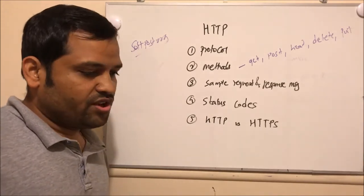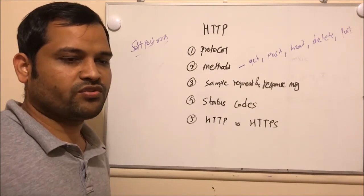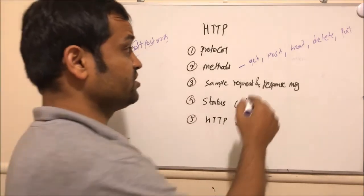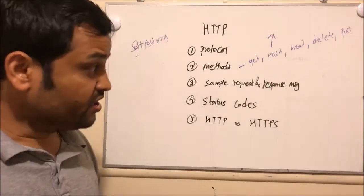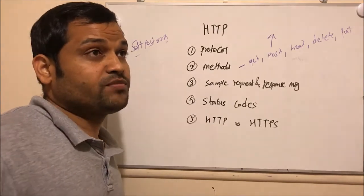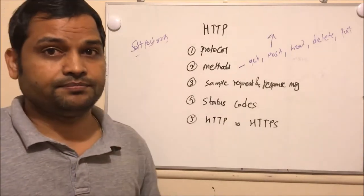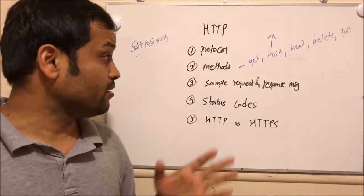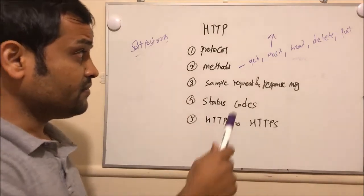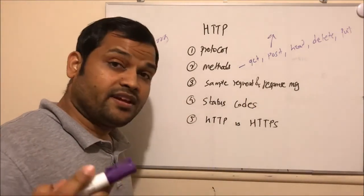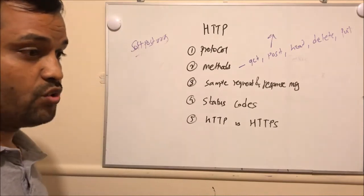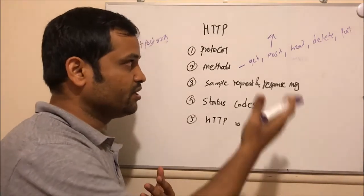The POST request is generally used when we submit forms. Like online, there are lots of various forms, and whenever we submit them, this POST request is sent. Then we have the HEAD request, which can be used to access the headers of the request. Then if you want to delete a document from the server, you can send a DELETE request. The purpose of each method is different: GET and POST are used to send data to the server, HEAD is used to get the header information, DELETE is used to remove a document from the server, and PUT means if you want to store a file on the server, you can use the PUT method.